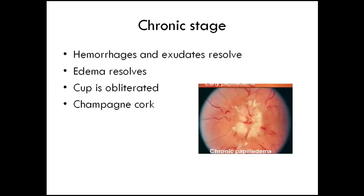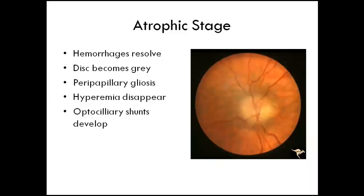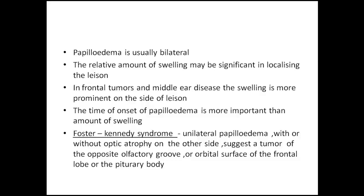In the chronic stage, the disc margin cannot be seen at all — there are very blurry disc margins with hemorrhages and exudates. The cup is completely obliterated, and you can see blood vessels coming out with a champagne cork appearance of vessels. If papilledema extends for a long period, the optic nerve starts to degenerate into the atrophic stage. Here, hemorrhages resolve, the disc becomes gray in color with new gliosis and fibrotic appearance. The hyperemia disappears and the disc appears pale.